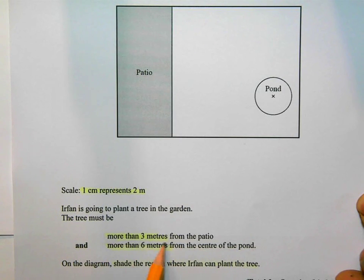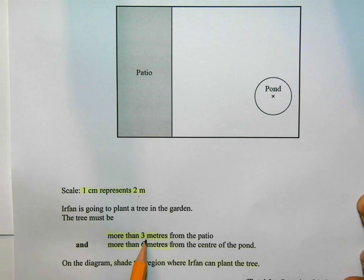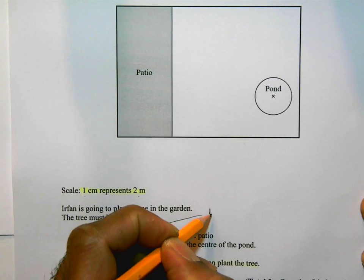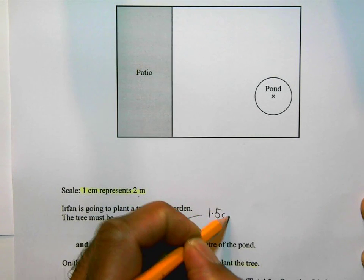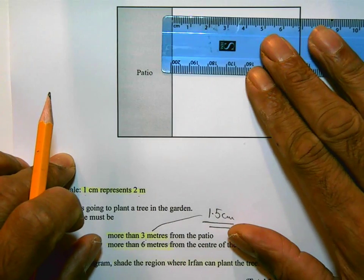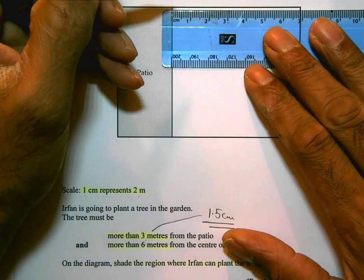So the first part is, the tree must be more than three meters from the patio. But remember, one centimeter is two meters. So three meters is going to be 1.5 centimeters. So what I'm going to do is mark from the patio. I'm going to go up there and do one and a half centimeters.